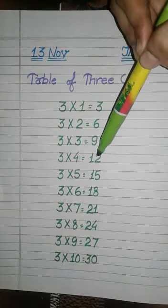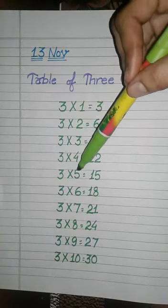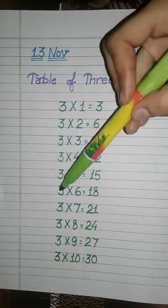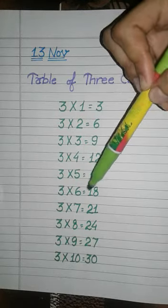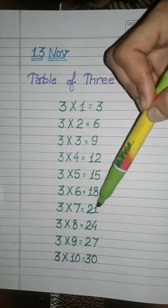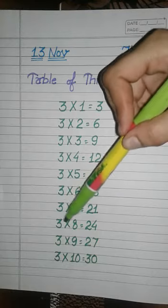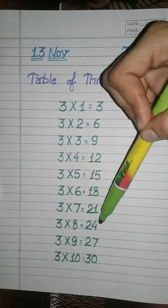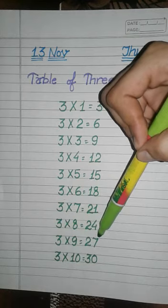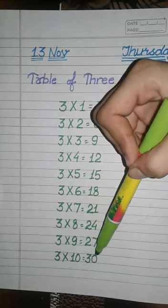3×4 is 12. 3×5 is 15. 3×6 is 18. 3×7 is 21. 3×8 is 24. 3×9 is 27. 3×10 is 30.